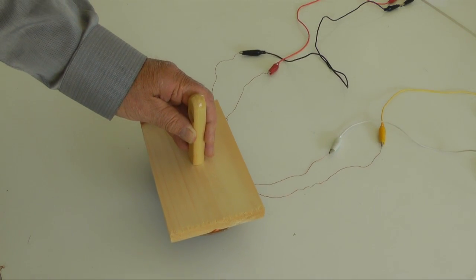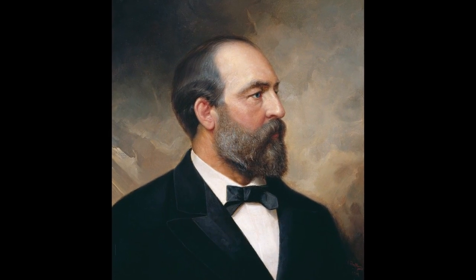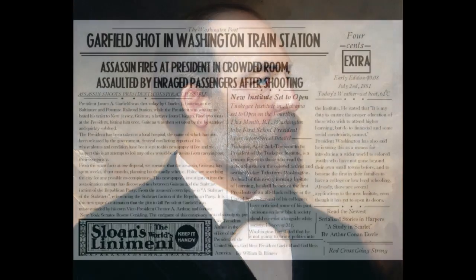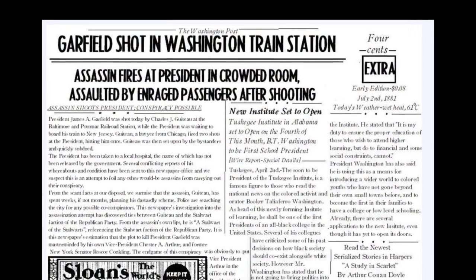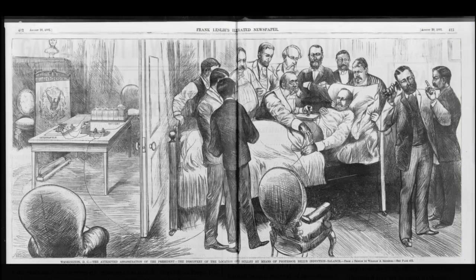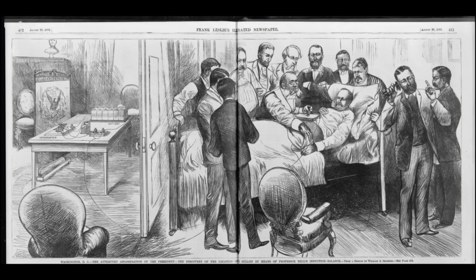There is another part to this story. You may be aware that American President Garfield was shot by an assassin, July 2, 1881. The medical team attending to the President called on Bell and asked if his metal detector could locate the bullet in his body.